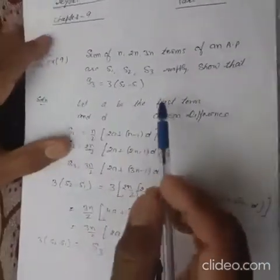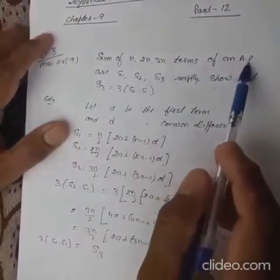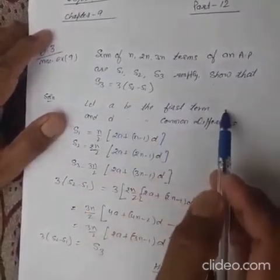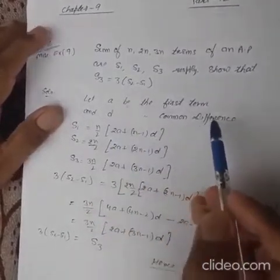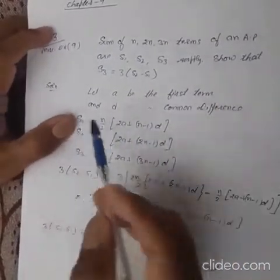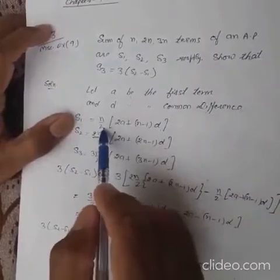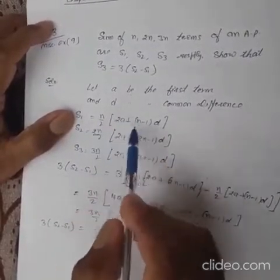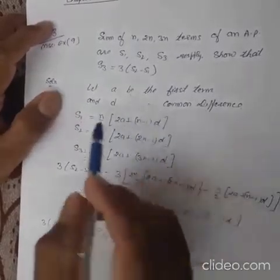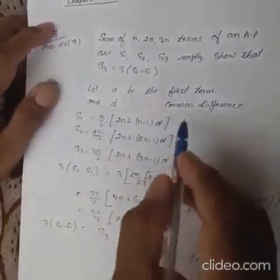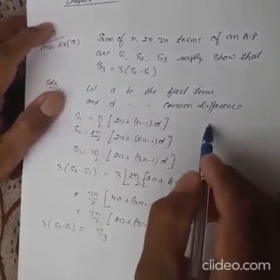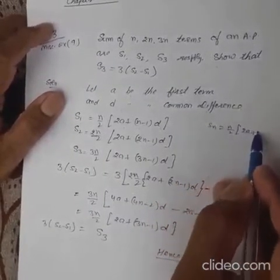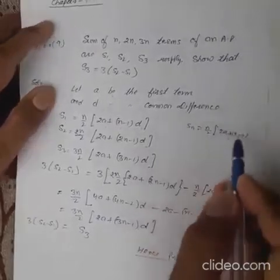This is an AP, so read the statement carefully. Let a be the first term of the AP and d be the common difference. Then S1 is the sum of n terms, which is n upon 2 into 2a plus n minus 1 into d. This is the sum of the first n terms using the formula Sn equals n by 2 into 2a plus n minus 1 into d.